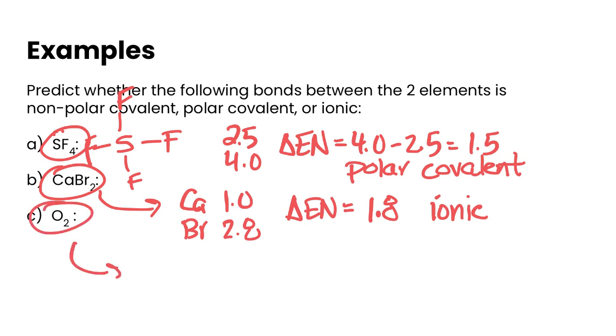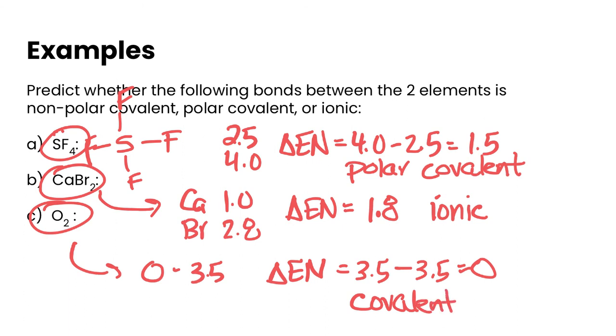Finally, O2. Oxygen has an electronegativity value of 3.5. So if we do the difference, we've got 3.5 minus 3.5. That's zero. So that is a true covalent bond or non-polar covalent bond. That's it for this video then. Let's move on to our next task.